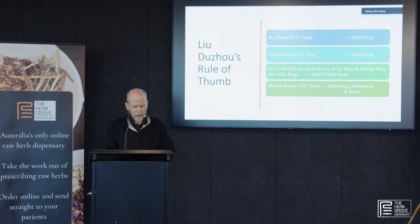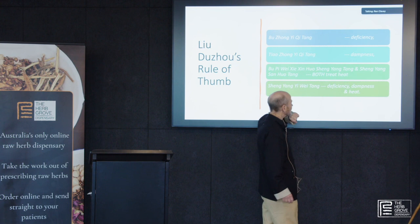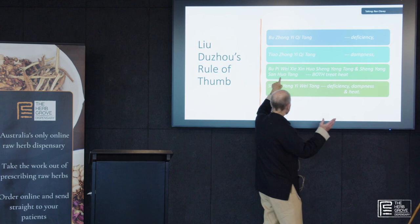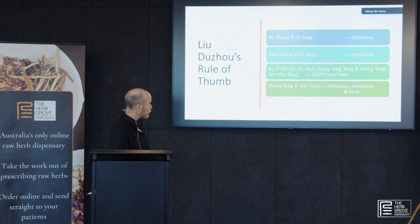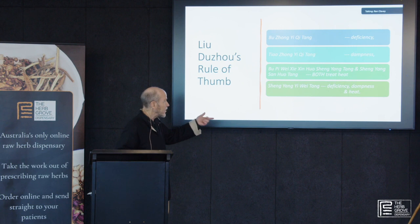Bu Pi Wei Xie Xin Huo Sheng Yang Tang — which is 'tonify spleen and stomach, drain heart fire, lift Yang decoction' — and Sheng Yang San Huo Tang, meaning 'lift Yang to disperse fire,' both treat heat. Sheng Yang Yi Wei Tang treats deficiency, dampness, and heat. I have to say that last one is one of my favorite formulas — I use it all the time.